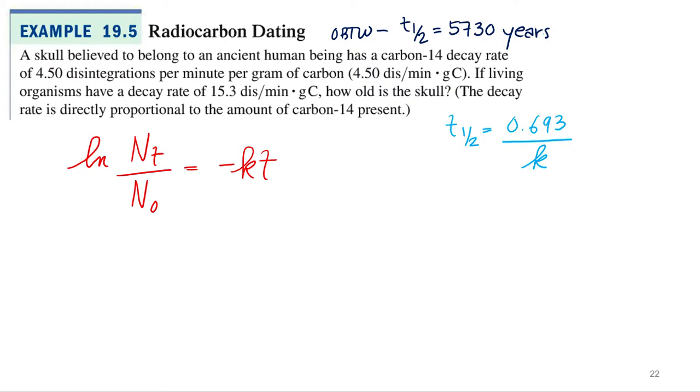So we're going to need that to solve for k, right? So let's just rearrange this for k, 0.693 over the half-life. And 0.693 over 5,730 years.